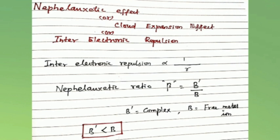The inter-electronic repulsion is inversely proportional to the distance r, that is 1/r. The reduction of Racah parameter from its free ion value is normally reported in the form of nephelauxetic parameter. The nephelauxetic parameter or nephelauxetic ratio β is a measure of the nephelauxetic ratio of a complex.